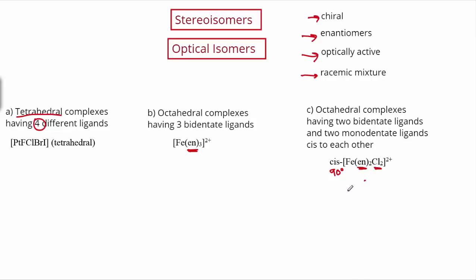These are the three situations when optical isomers are possible, and I highly recommend you memorize them. I tried to show you visually, but at the end of the day, if you can visualize it you're probably a very spatially gifted person — the vast majority of students really struggle with this one, so memorizing these three instances is the way to go.